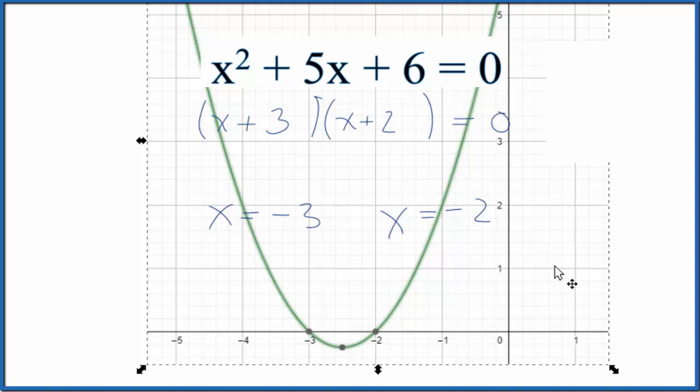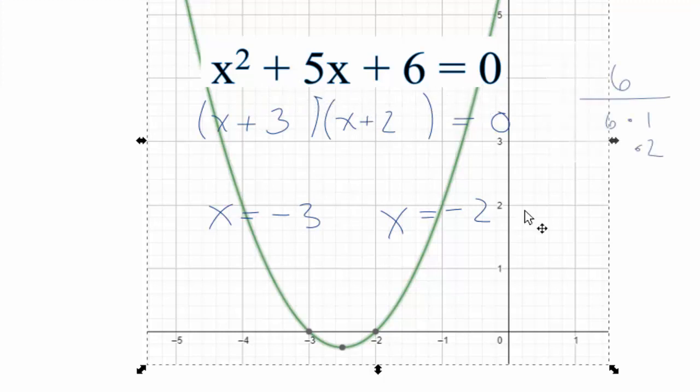This is Dr. B, factoring the equation x squared plus 5x plus 6 equals 0. So thanks for watching.